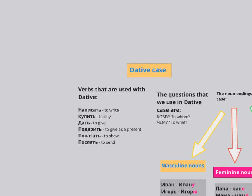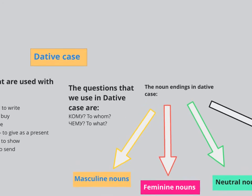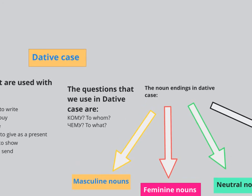Let's move on to the second part — the questions we use in the dative case. They are кому, when you talk about people: who did you give the present to? Who did you send it to? Who did you send the flowers to? Чему is more like 'to what', and we're not going to look at this as such because it's not so popular.